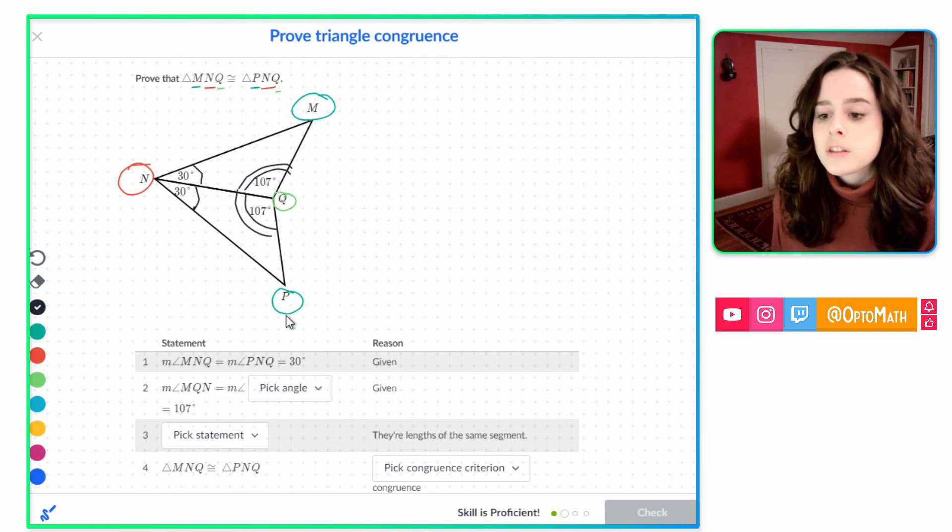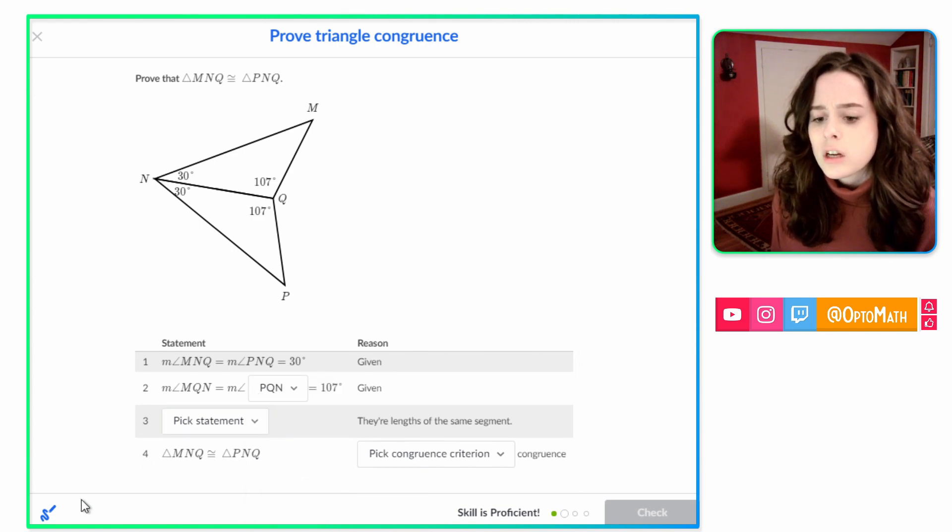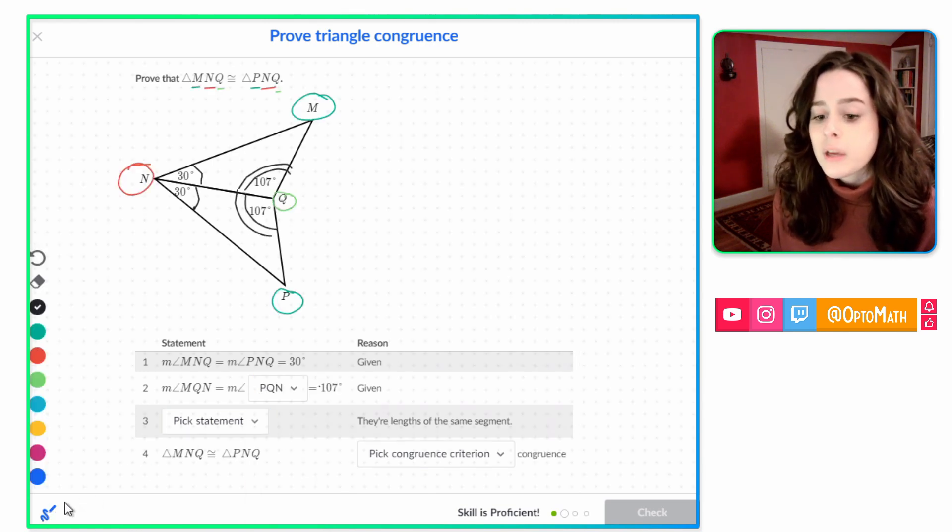Let's see how they're going to label it. It's going to be either PQN or NQP. So let's check PQN. Yes. So there's that one. And again, that's given because the angles are written in our picture.